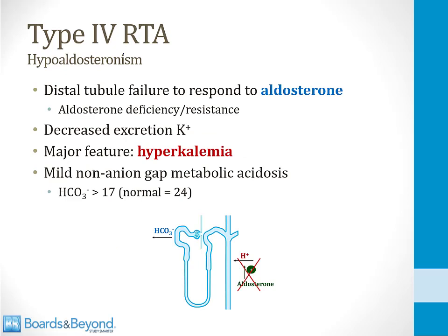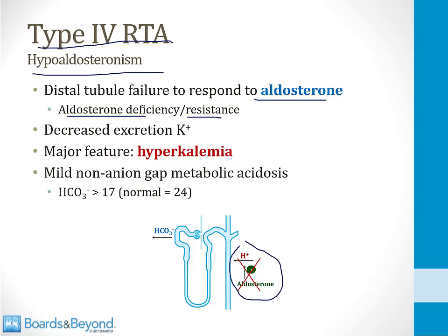We'll finish by discussing the third type of renal tubular acidosis — that's a type 4 RTA. A type 4 RTA is basically the clinical picture that arises when you have hypoaldosteronism. If there are decreased effects of the hormone aldosterone for whatever reason, that leads to the acid-base disturbance called a type 4 RTA. In a type 4 RTA, the distal tubule fails to respond to aldosterone. This can be either because there are deficient levels of aldosterone in the body or because of aldosterone resistance. When there is decreased activity of aldosterone, there's less excretion of potassium, and that leads to hyperkalemia — this is the only RTA associated with high potassium.